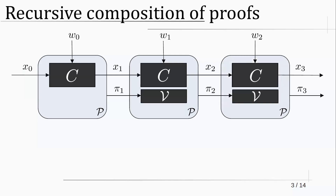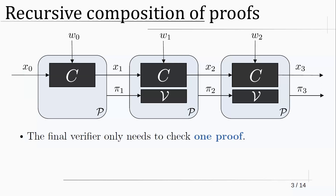Nothing prevents you from doing this again and again — you have a proof π3 which attests to the correct evaluation of the series of statements, and you can do this for as long as you want. The interesting thing is that there is only one proof that you keep updating, and anyone who wants to check the whole computation just needs to check the latest proof.